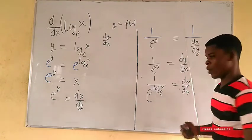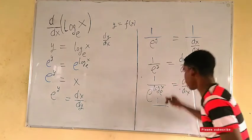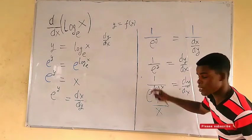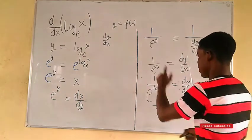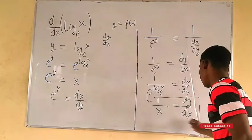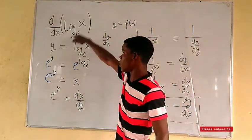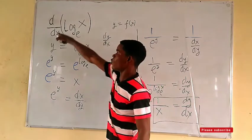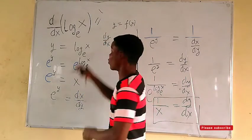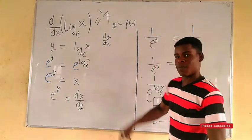Now, e to the log of x to base e simplifies to just x. So we have dy/dx equals one over x. Therefore, the derivative of log of x to base e with respect to x is simply 1/x. Thanks for watching — please subscribe to this channel.